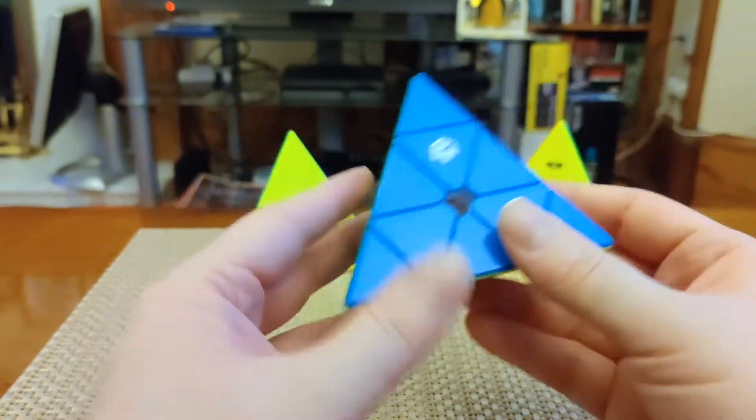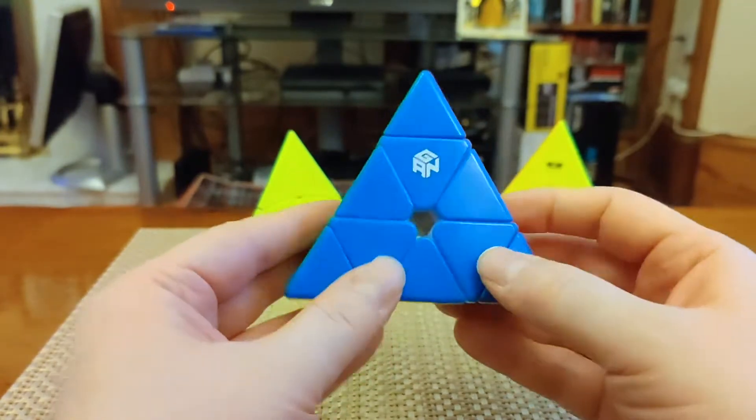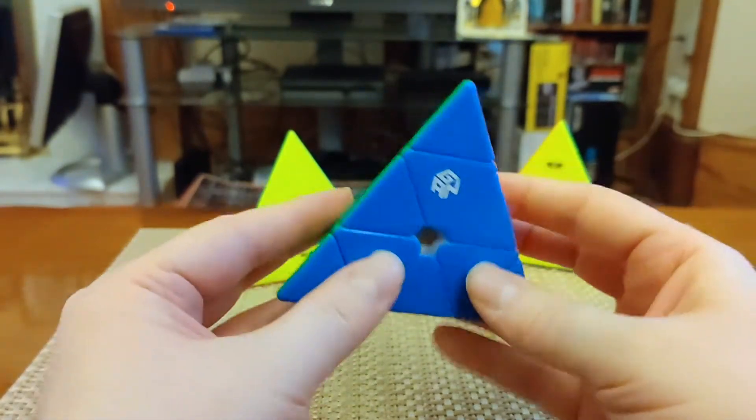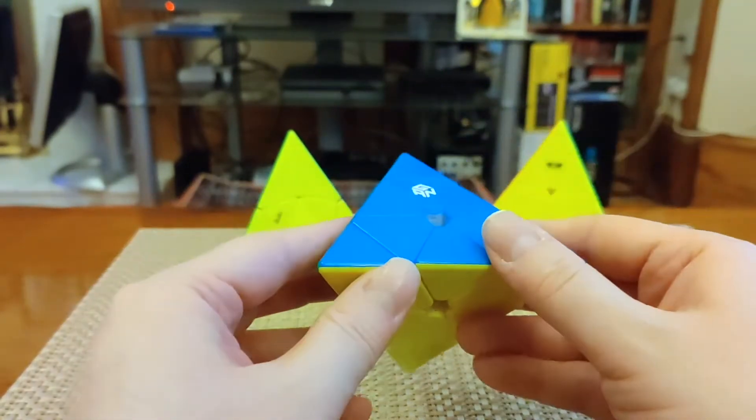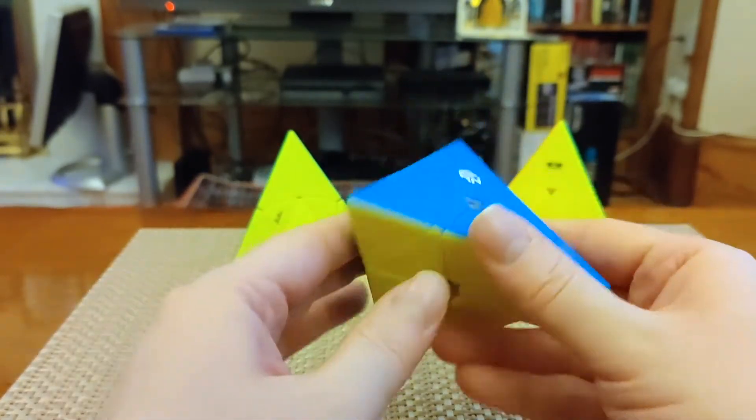There are six edges in total. Basically the main work of solving a Pyraminx is around permuting and orienting those six edge pieces. The Trivial Tips are trivial, the corners can be turned into place, and then it's all about putting the edges where they need to be. It's a simple puzzle, but a classic.